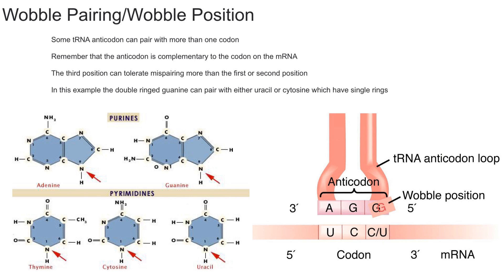The last thing I want to briefly go over is the importance of the wobble hypothesis. Currently the belief is that the wobble hypothesis explains why multiple codons can code for a single amino acid.